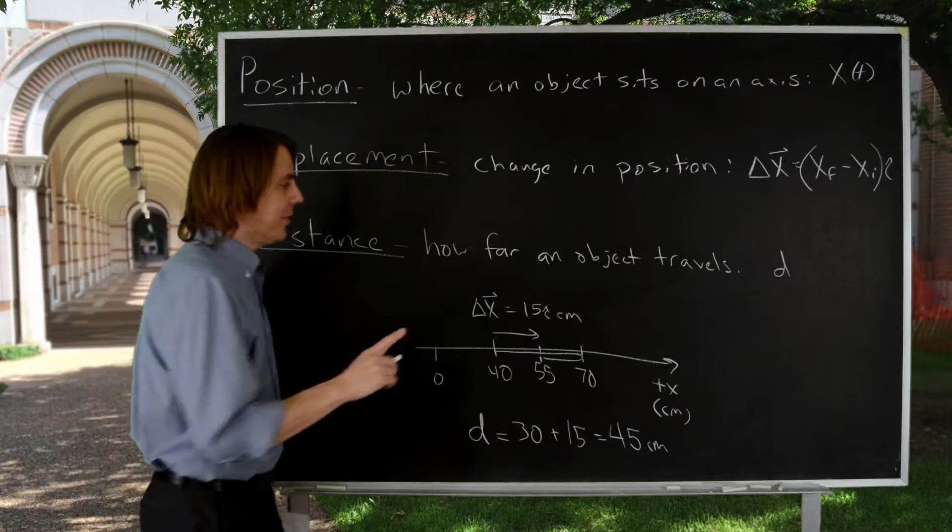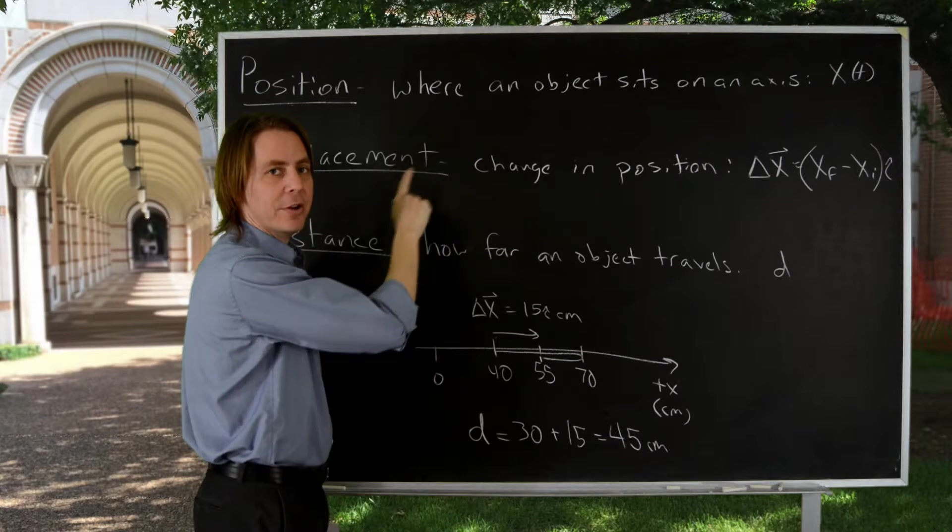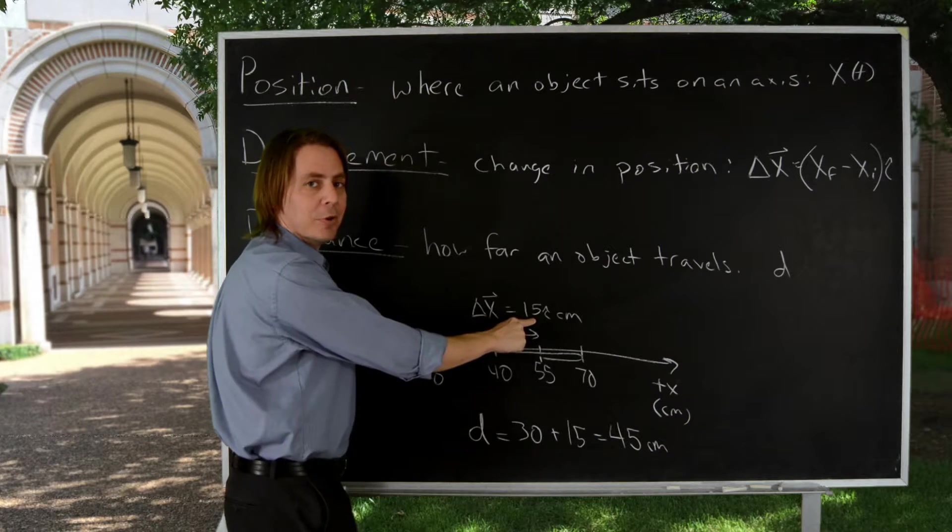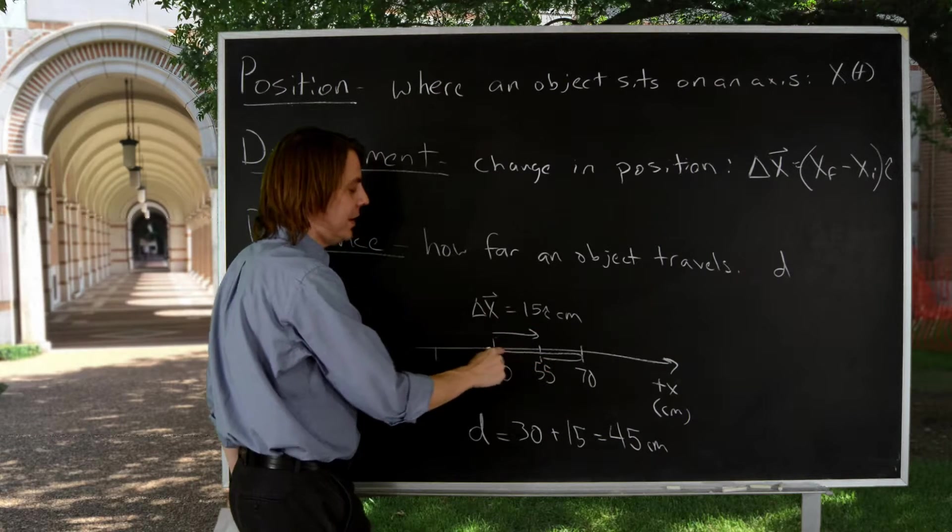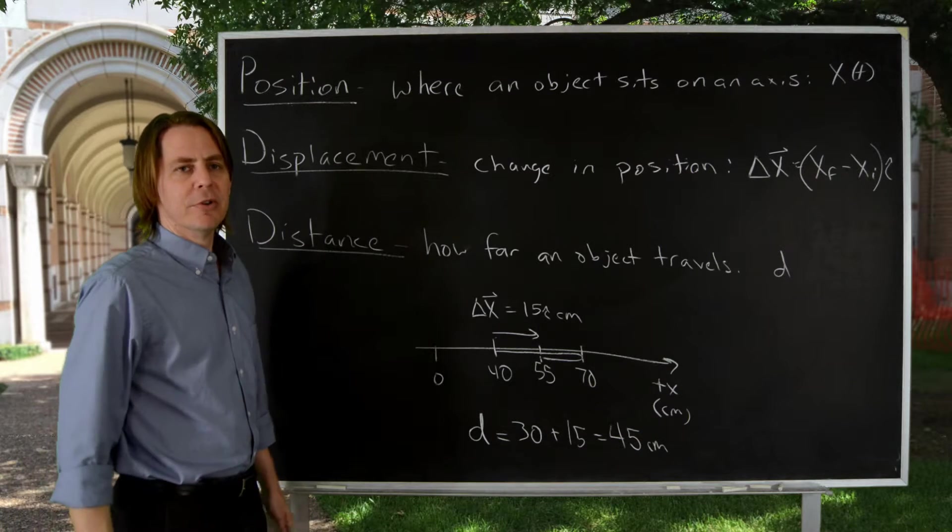But the displacement of that path, displacement doesn't care about how you got there. Displacement just cares about final and initial. So for this path, the displacement is actually the same as it was before. The final is 15, the initial is 40. So distance cares about the path, displacement does not.